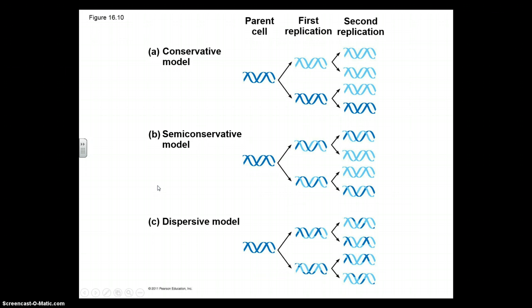There are three different ways this can happen. In the conservative model, the original DNA molecule is conserved. By the time of the fourth replication, you still have the original DNA molecule and three brand new pieces of DNA, which could result in a problem if there were some form of mutation.